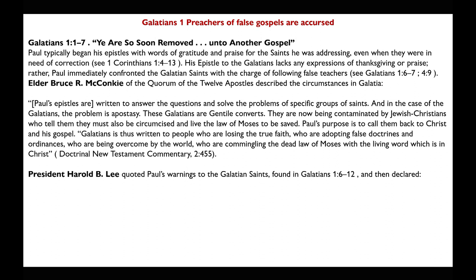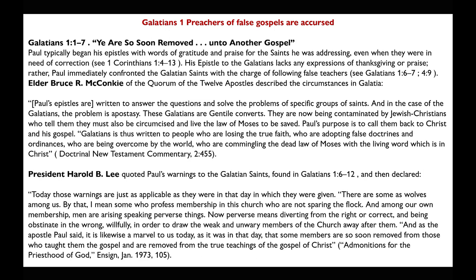President Harold B. Lee quoted Paul's warnings to the Galatian saints in Galatians 1:6-12 and declared: 'Today these warnings are just as applicable as they were in the day they were given. There are some as wolves among us — some who profess membership in this church who are not sparing the flock. Among our own membership, men are rising speaking perverse things' — perverse meaning diverting from the right or correct and being obstinate in the wrong — 'willfully in order to draw the weak and unwary members of the church away after them.'